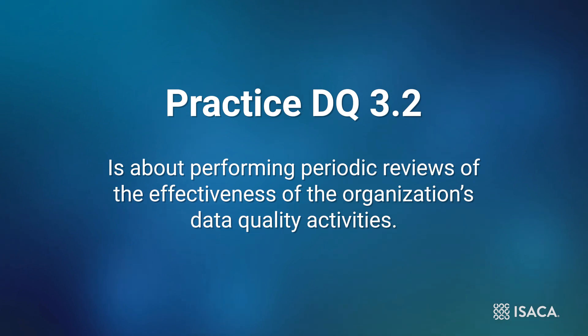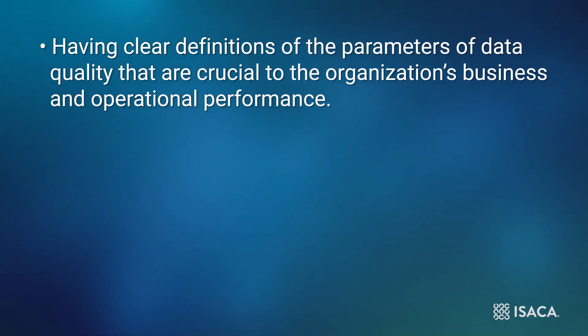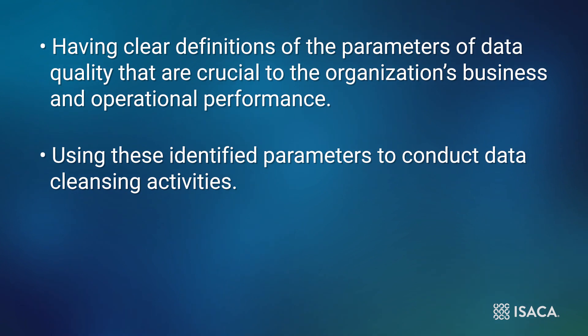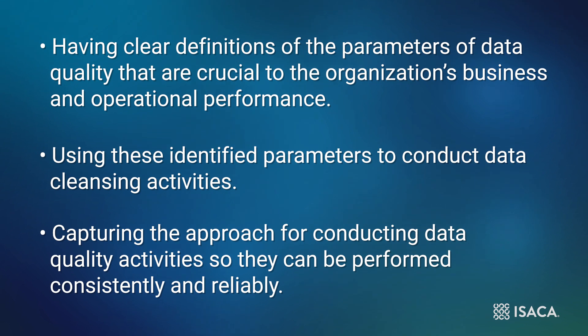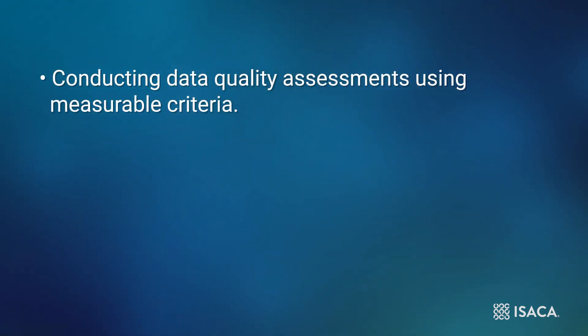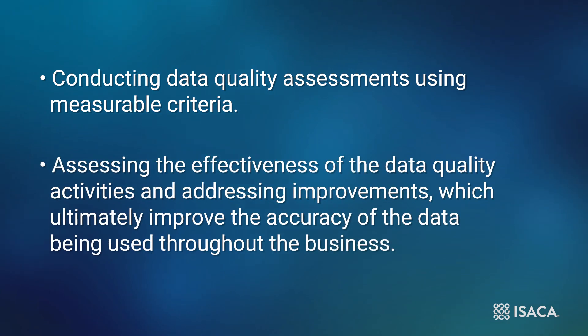The results of data quality assessments inform activities for practice DQ 3.2, which is about performing periodic reviews of the effectiveness of the organization's data quality activities. Lessons learned typically lead to improvement activities. The overall key to this practice area can be summarized as: having clear definitions of the parameters of data quality crucial to business performance; using those parameters to conduct data cleansing; capturing the approach so activities are performed consistently; conducting assessments using measurable criteria; and assessing effectiveness to ultimately improve the accuracy of data used throughout the business.